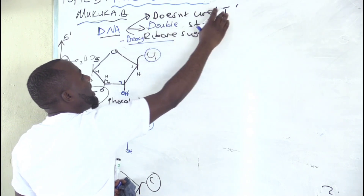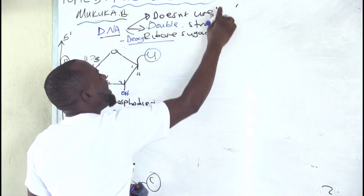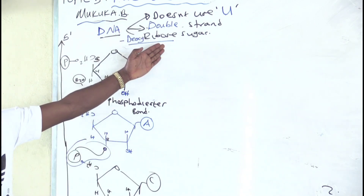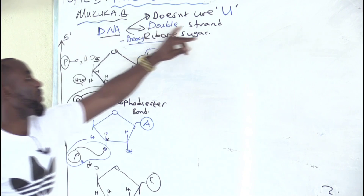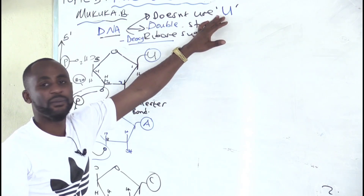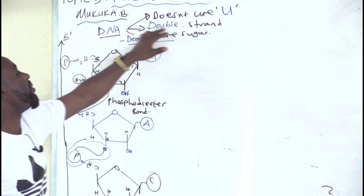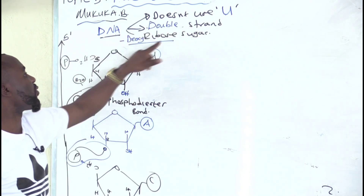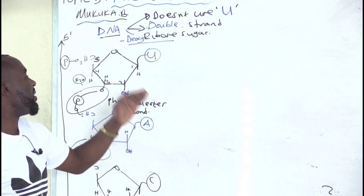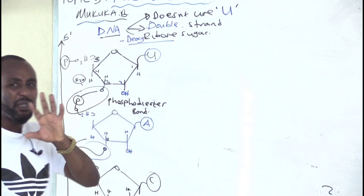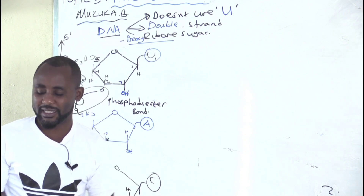Instead of using thymine, DNA doesn't use uracil. So the differences between RNA and DNA: when making DNA, we use thymine but not uracil. DNA is a double-stranded structure while RNA is single-stranded. When making DNA, we use deoxyribose sugar, meaning on carbon number two you don't put OH but you put H. Let me transform this structure into DNA so you can see what is happening.